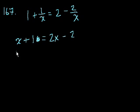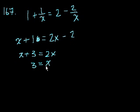Let's add 2 to both sides. So you get x plus 3 is equal to 2x. Let's subtract x from both sides. You get 3 is equal to x. And that's choice E.